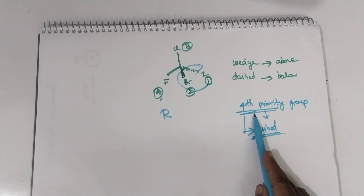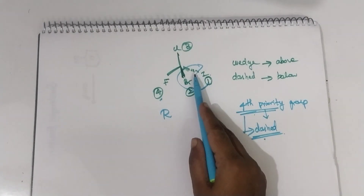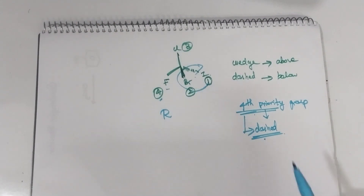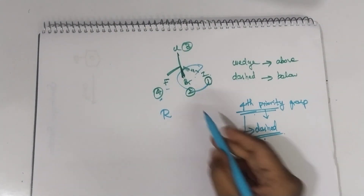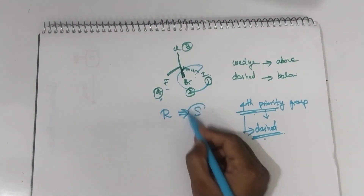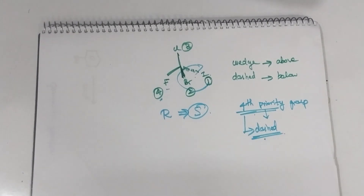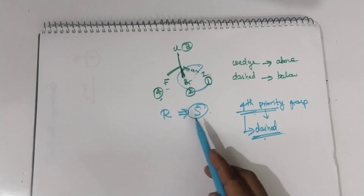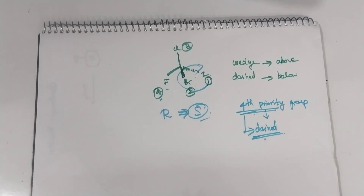But the fourth priority group should be in the dashed position, and it is not so — it is present in the solid line. Hence, you have to invert the configuration. R becomes S, and S is the final absolute configuration for this compound in this flying wedge projection.